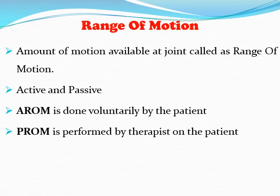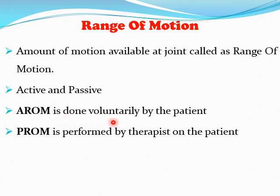The amount of motion available at a joint is known as range of motion. There are two types: active and passive. Active range of motion is performed voluntarily by the patient. Passive range of motion is performed by the therapist on the patient.